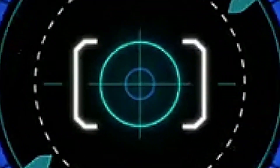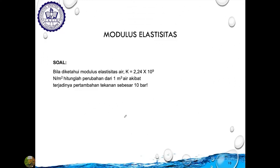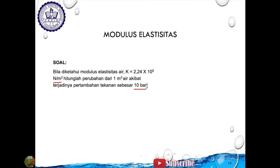Diketahui modulus elastisitas air K adalah 2,24 × 10⁹ N/m². Hitunglah perubahan volume dari 1 m³ air akibat terjadinya pertambahan tekanan sebesar 10 bar. Jadi yang ditanya di sini adalah perubahan volume dari 1 m³ air tersebut akibat pertambahan tekanan 10 bar.